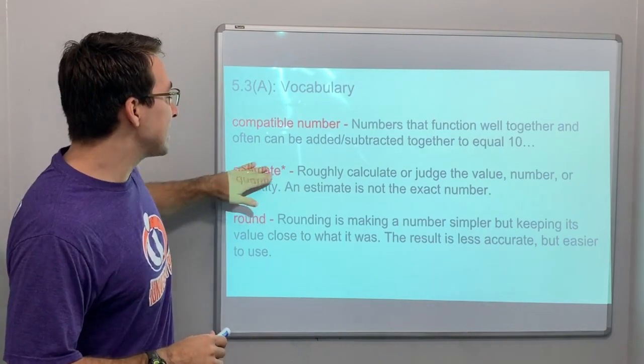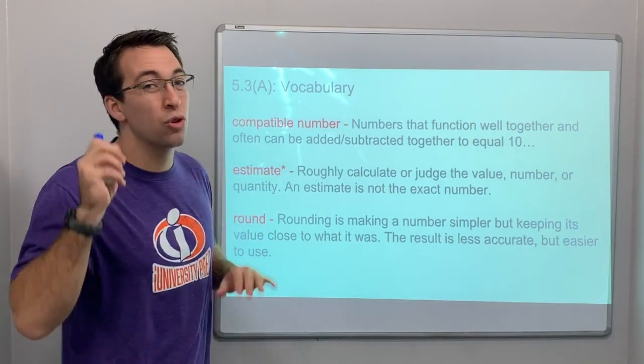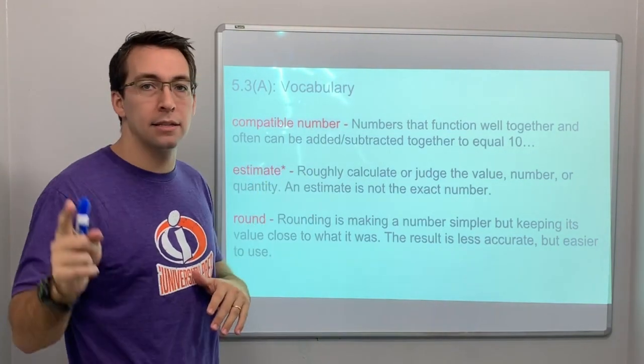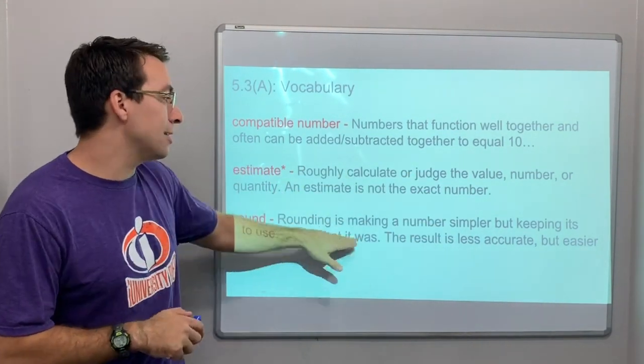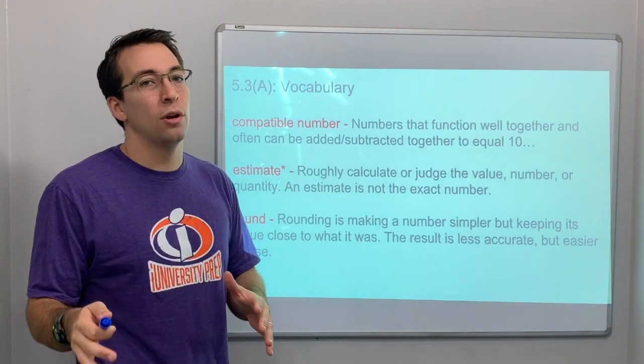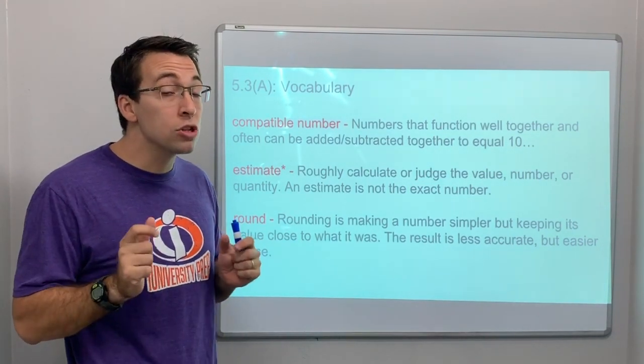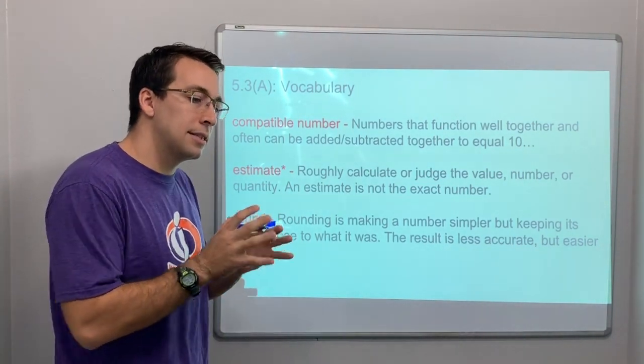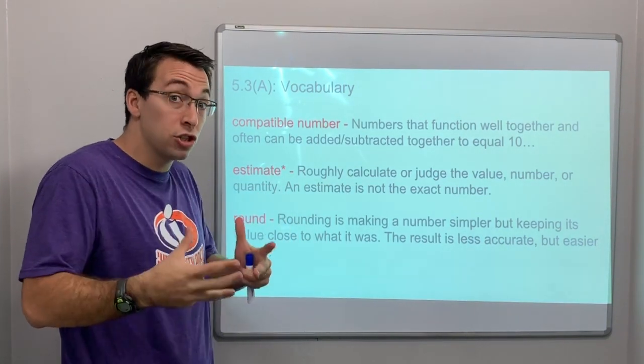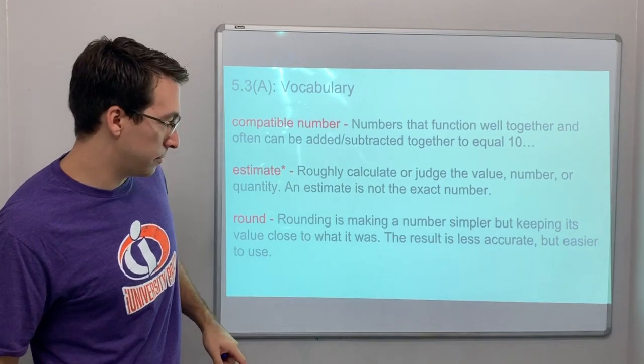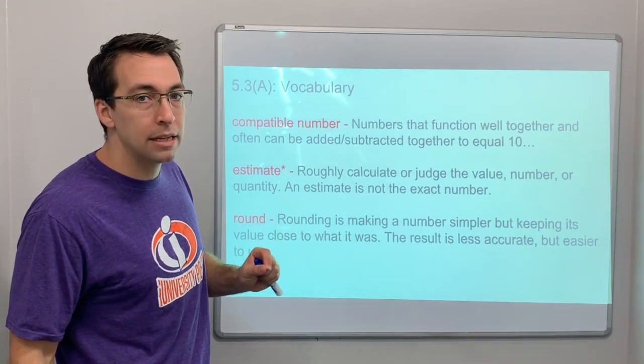Estimate means you can roughly calculate, it's not the exact answer, roughly calculate or judge. And round—rounding is making a number simpler but keeping its value close to what it was. It's simpler, a little easier to use but the value is still close to the true number. A little less accurate but easier to use.